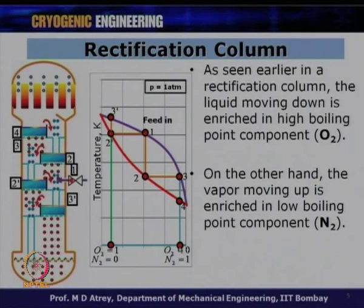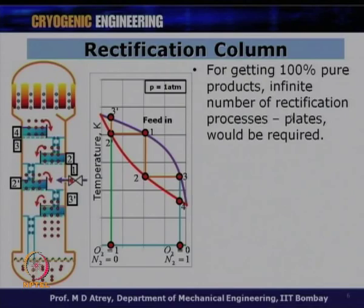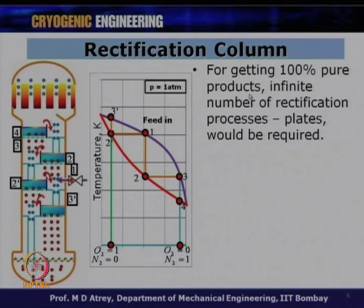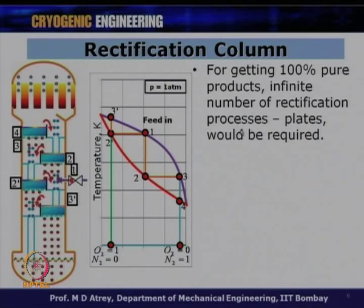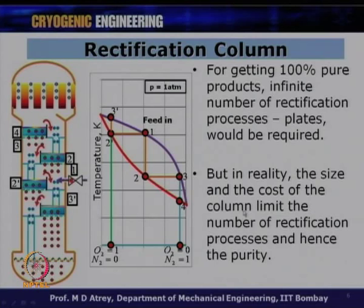This means that to get 100% pure products — whether 100% nitrogen or 100% oxygen — you would need an infinite number of rectification processes, meaning infinite plates, because heat transfer is never perfect and there will always be some ineffectiveness. In practice, the size and cost of the column limit the number of plates and therefore the purity achievable.